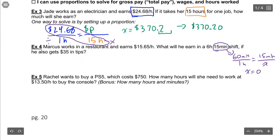Marcus works in a restaurant, he earns $15.65 per hour. What will he earn in a 6 hour and 15 minute shift if he also gets $35 in tips? So the 15 minutes is going to make our hours 6.25 hours as we've just said. We're going to set up our proportion with our hourly pay: $15.65 per one hour is an unknown amount of pay for our 6.25 hours.